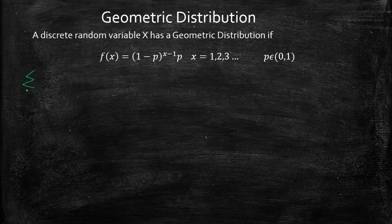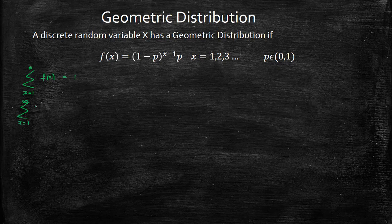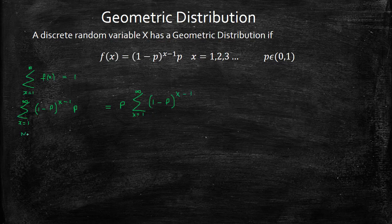For the geometric distribution, we have the summation from x equals 1 to infinity of f(x) equal to 1. So the summation from x equals 1 to infinity of (1 minus p) raised to (x minus 1) times p equals 1. We can bring p out front since it is not associated with x, giving p times the summation from x equals 1 to infinity of (1 minus p) raised to (x minus 1).